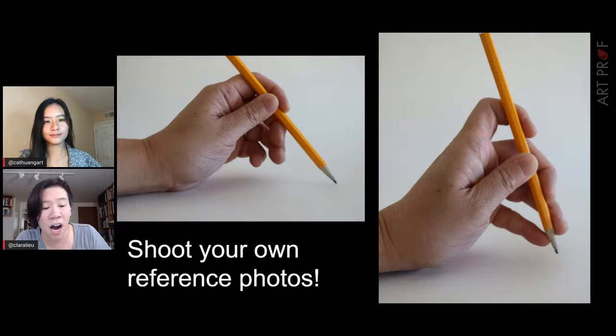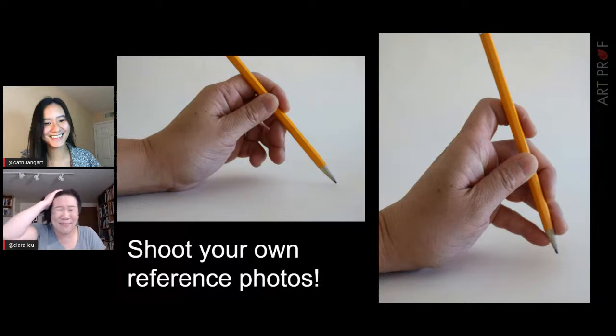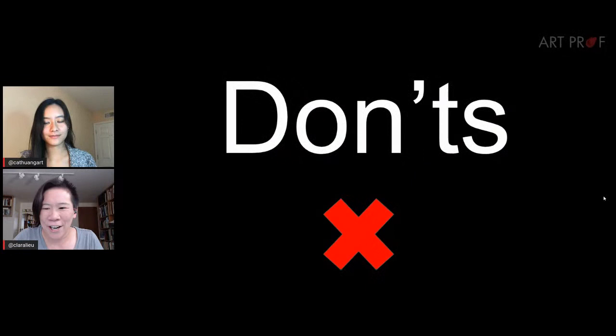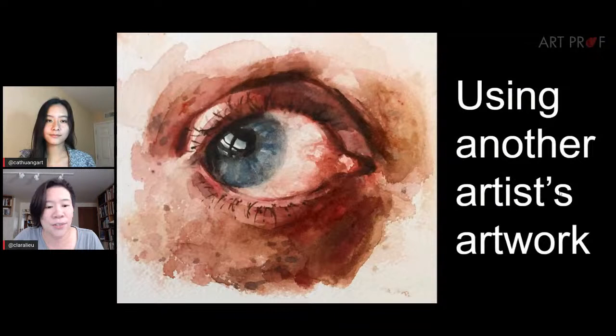What we want to do in this stream is show you how to find photos off Google Images and what to look for. But we also want to tell you: if you need a picture of a hand, don't Google it — you've got two arms and a phone, just take the photo. Let's go over some don'ts that will save you a lot of grief in the actual drawing process.